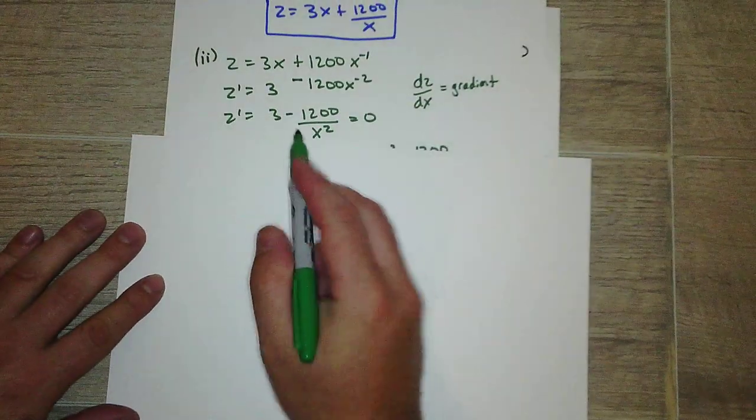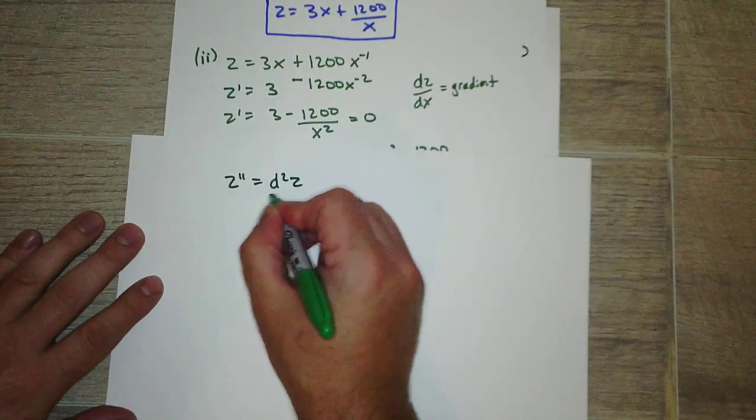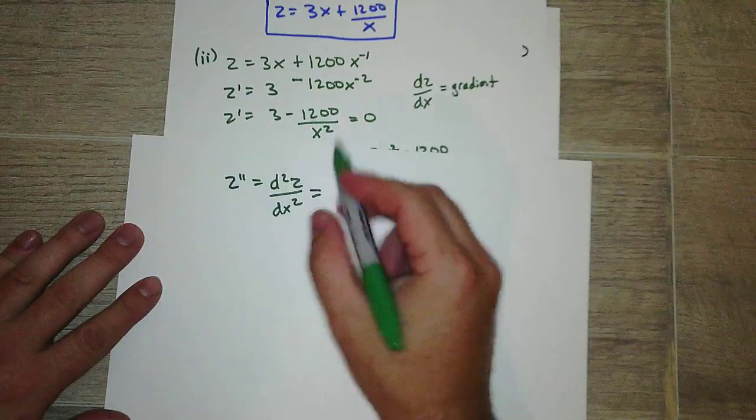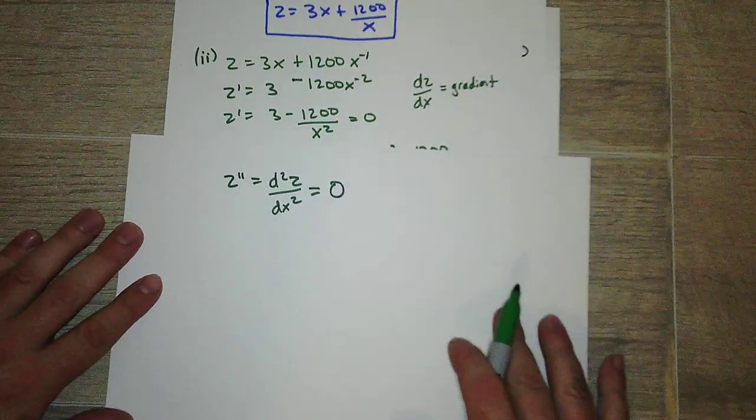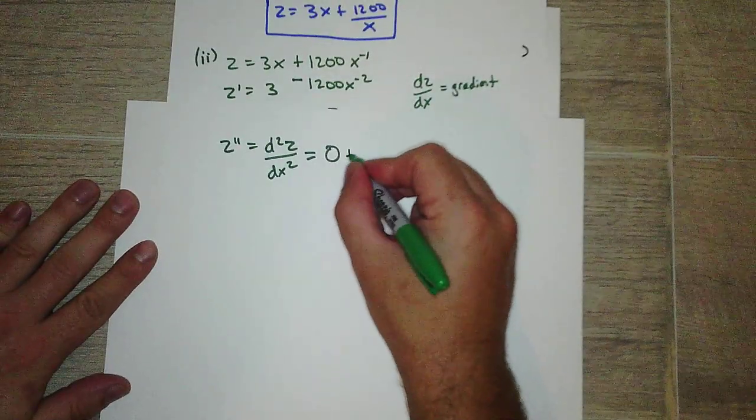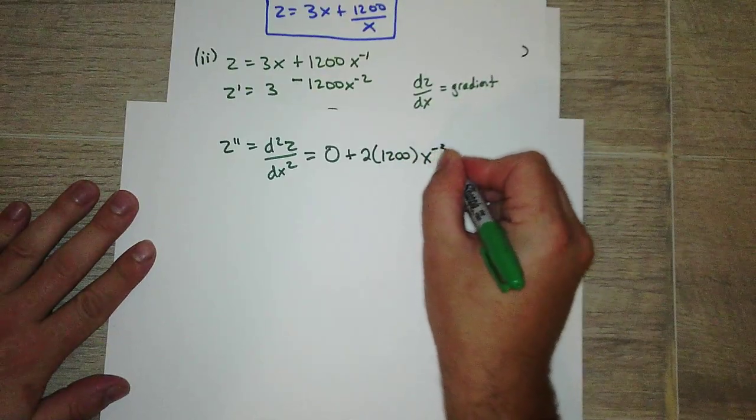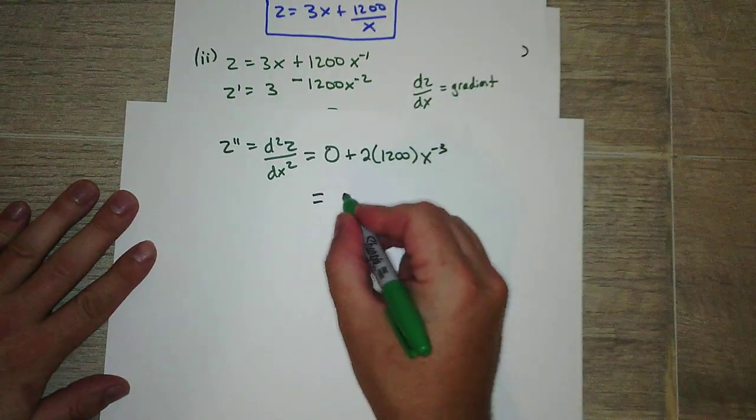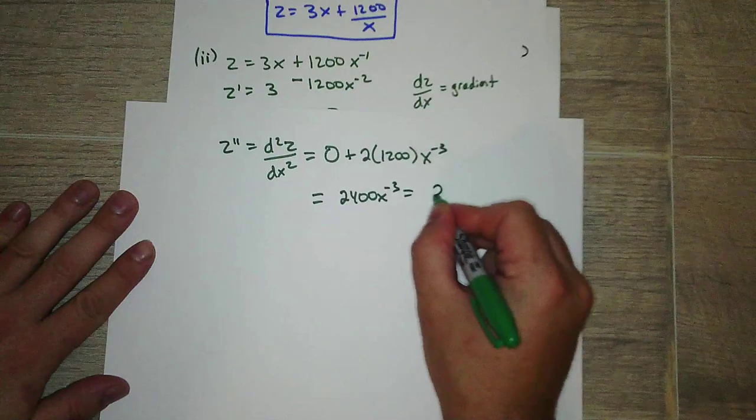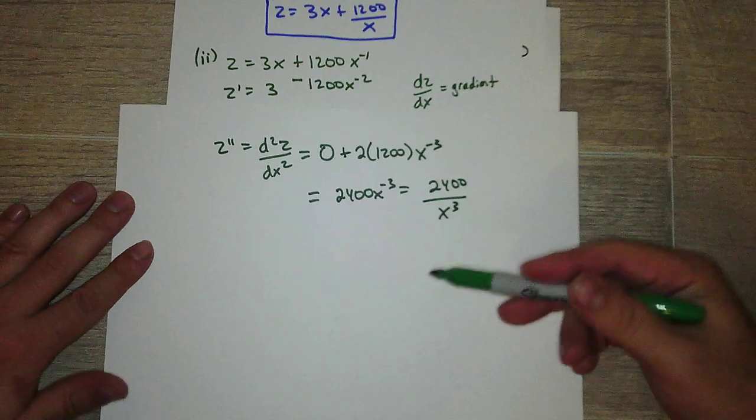That will tell you maximum or minimum. So let's test that out. Let's take this and let's take the derivative of that. Okay, so z prime. So z double prime, or the second derivative. Okay, so the derivative of 3 is zero. It might be better to take the derivative using this one. So the derivative of 3 is zero. Bring down the negative 2, we get positive 2 times 1200, and then subtract one. So it's 2400x to the negative 3, or 2400 over x cubed.